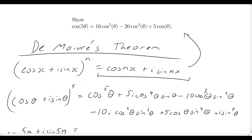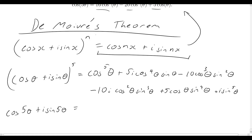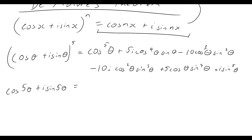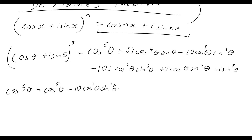However, in our original problem we're only interested in showing that cos(5θ) equals the following expressions. We notice that they're all real values written in terms of cosine. So we can go through and straight up get rid of all the imaginary components. Cos(5θ) can be written as cos⁵θ — the next term, 5i·cos, is imaginary so it disappears. The next real term is minus 10cos³θ·sin²θ, then another imaginary term, and then plus 5cosθ·sin⁴θ.